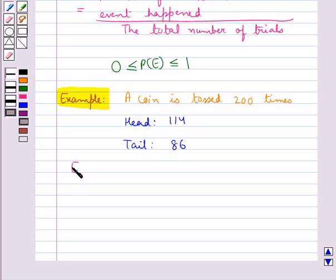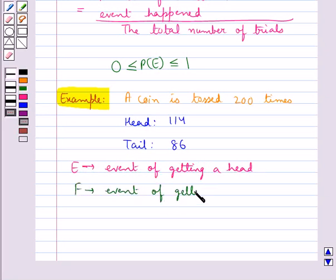Consider E to be an event of getting a head and F be an event of getting a tail.